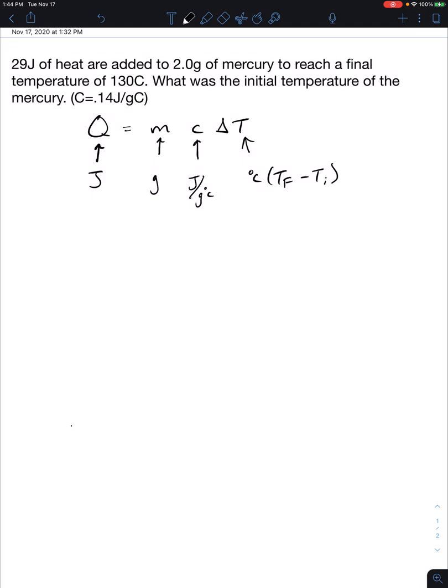Let's identify our Q. Our Q is 29 joules. How we knew that is because it has the unit of joules at the end of it. So this is 29 joules is equal to the mass. The mass is 2.0 grams. We're multiplying that by the given specific heat capacity which is 0.14 joules per gram degrees Celsius times the change in temperature. The change in temperature we have 130 degrees Celsius as our final temperature minus our initial temperature Ti. We're going to leave that as the variable because that's what we're solving for.